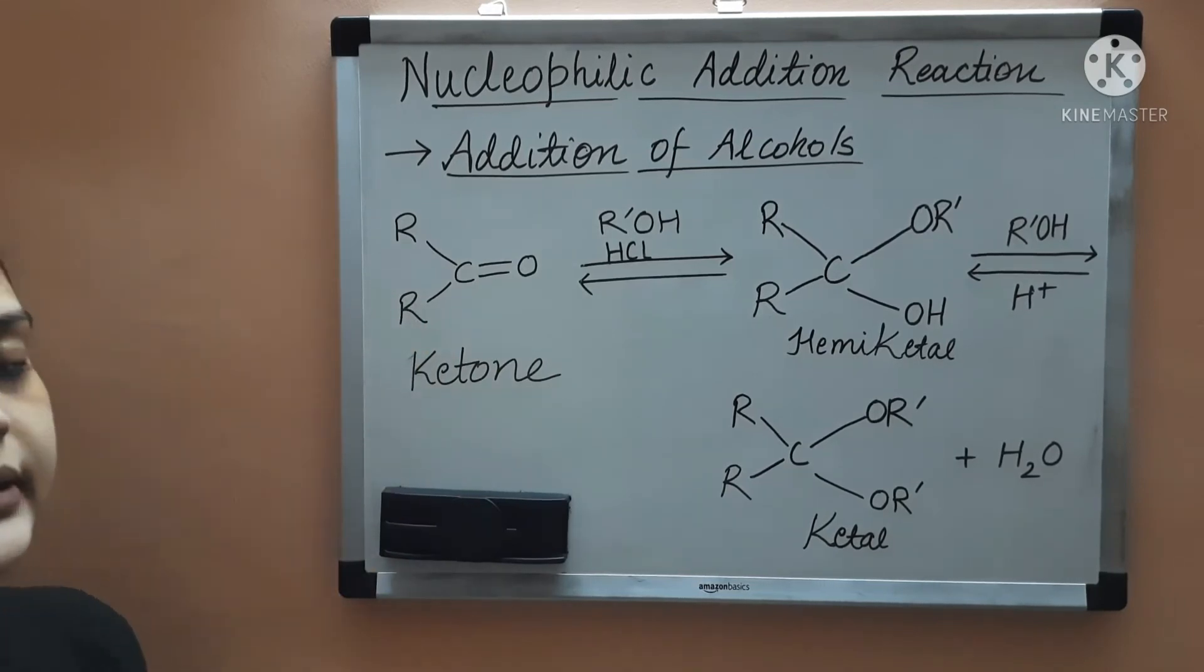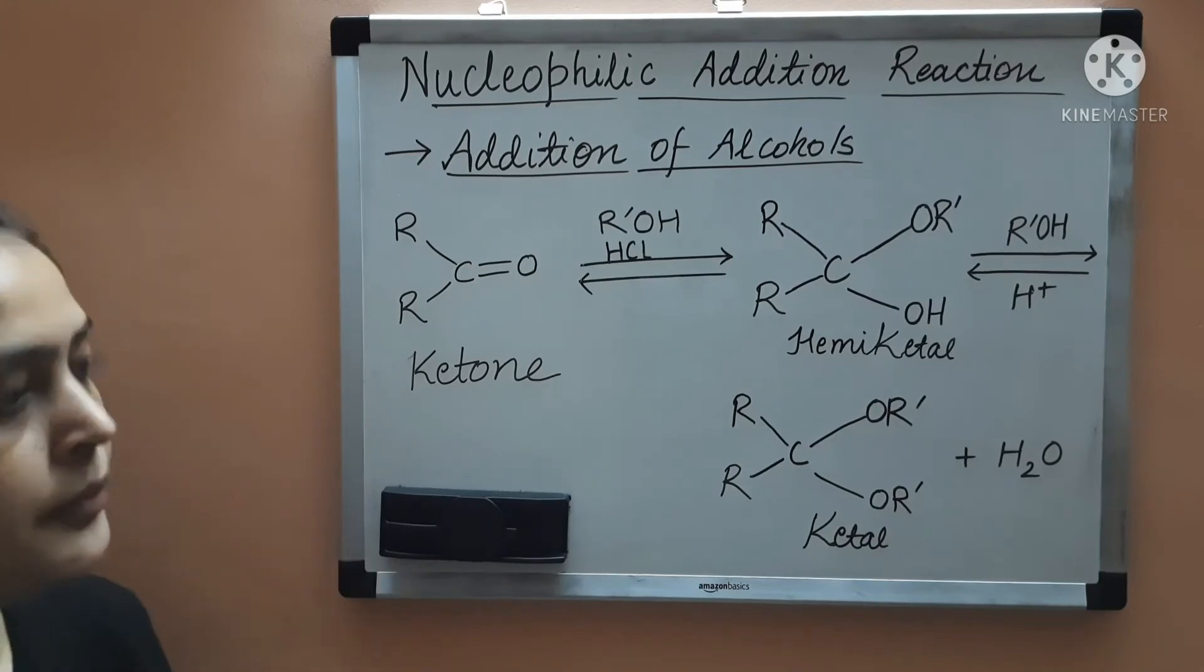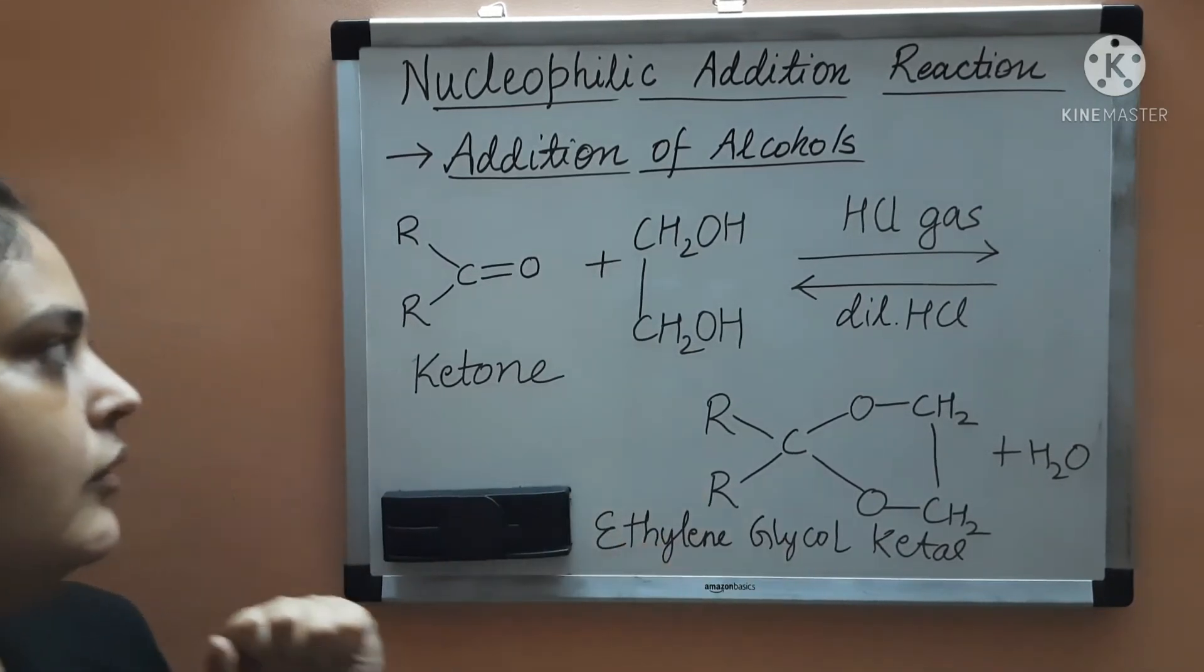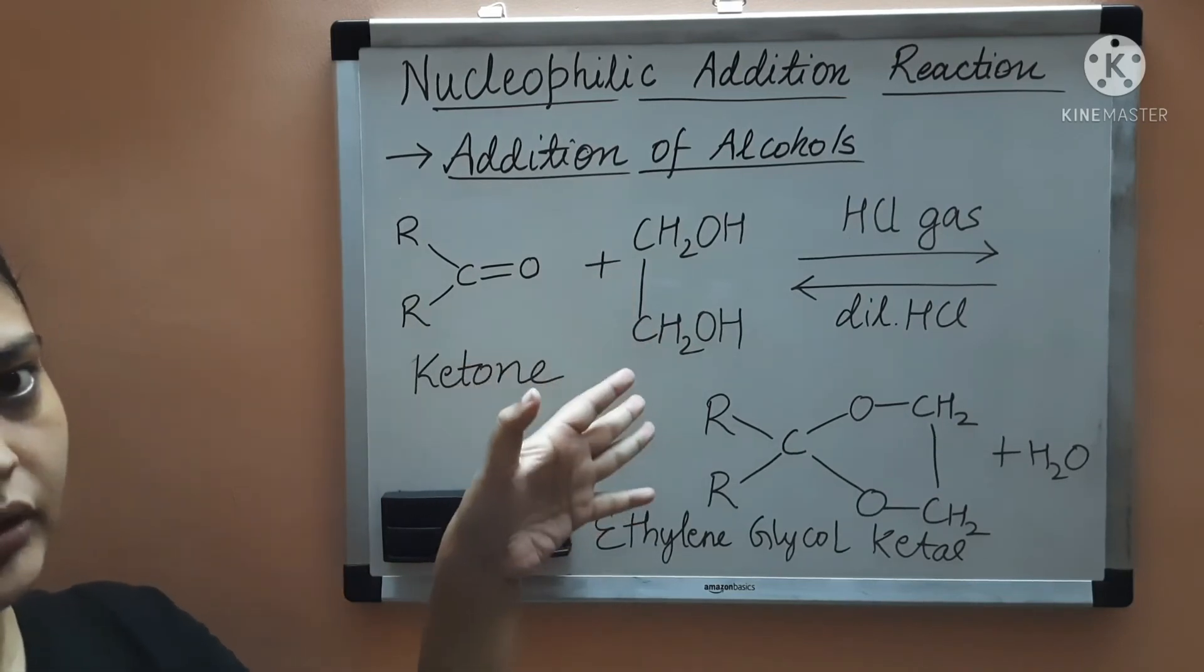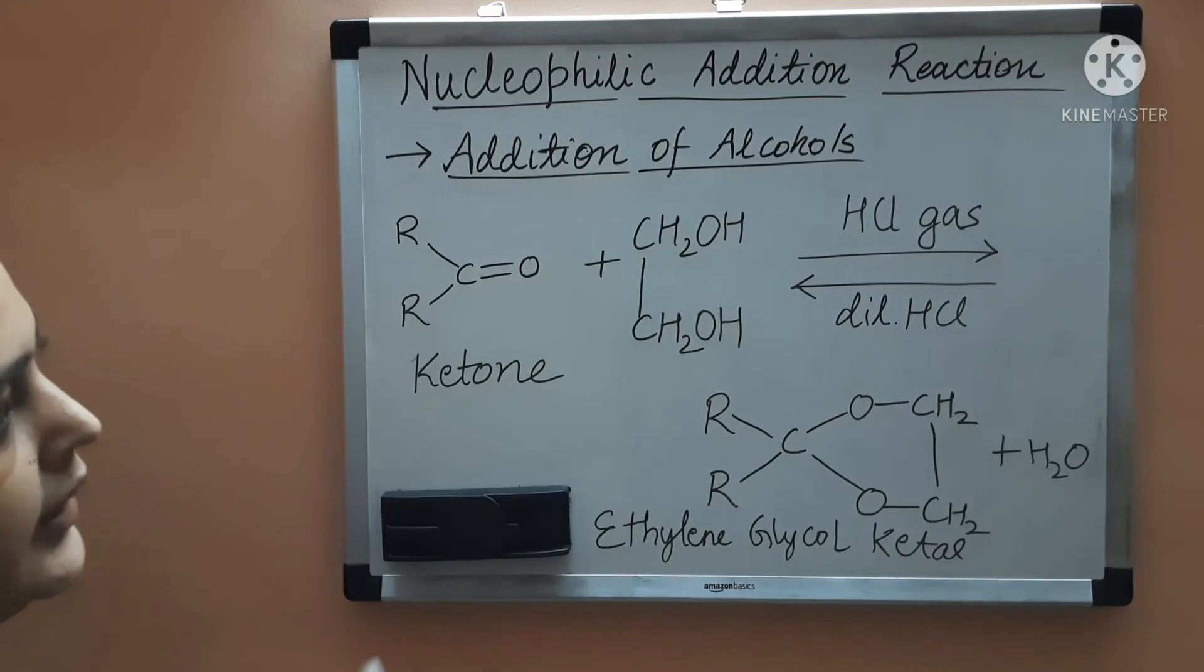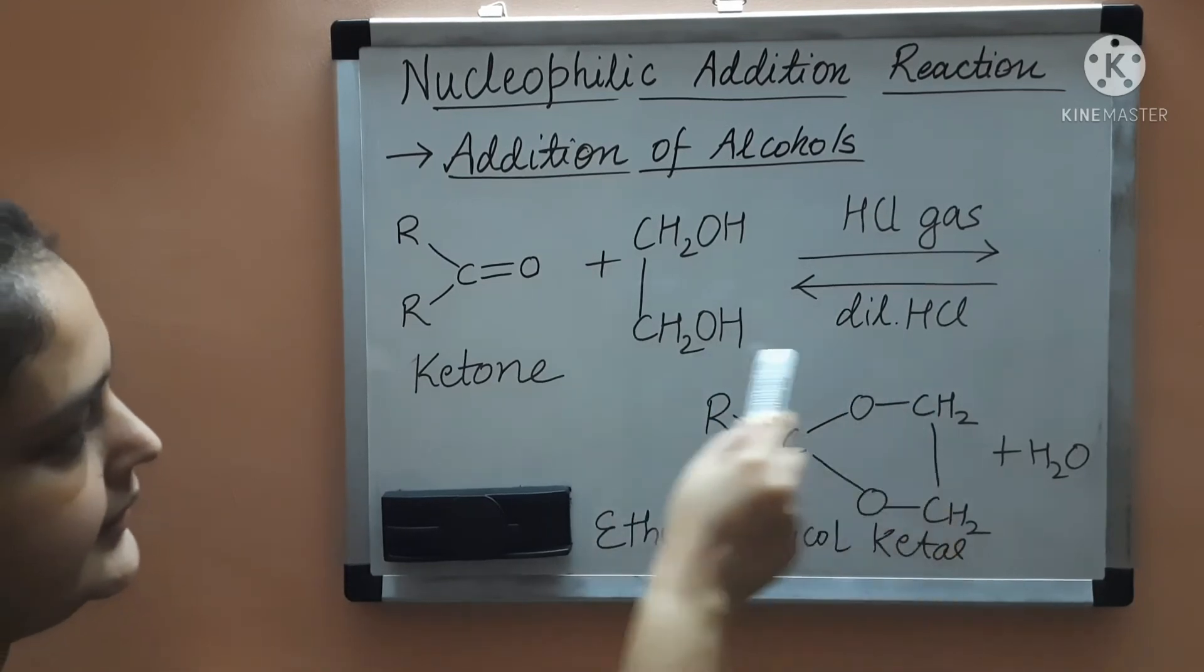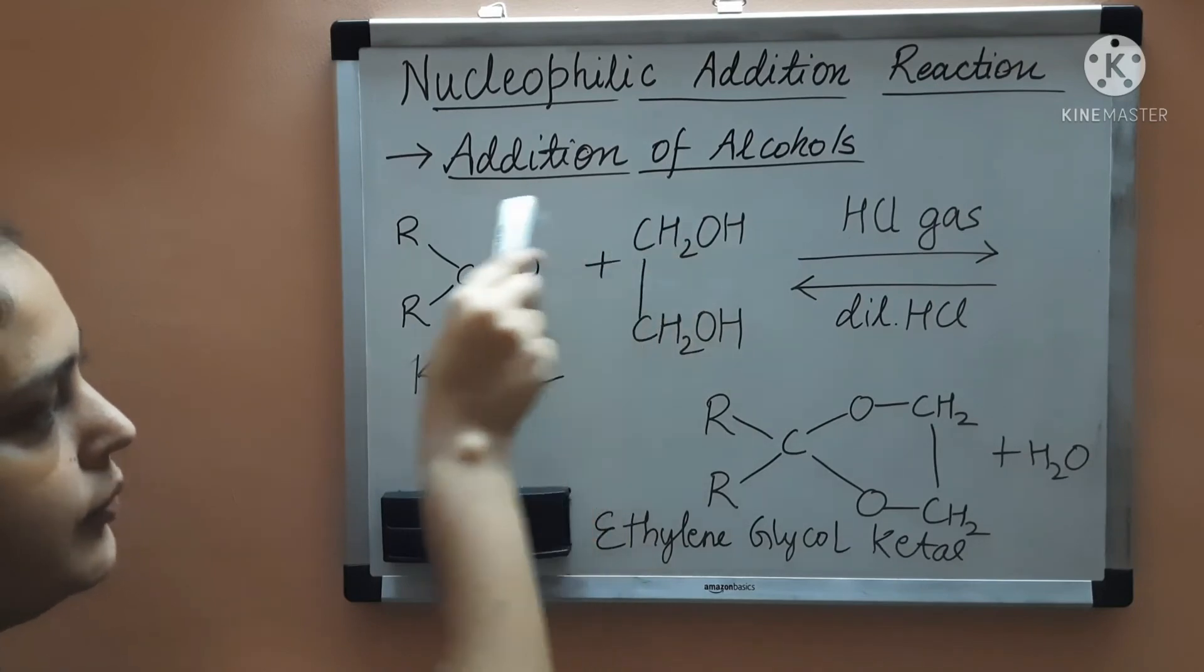You can get cyclic ketal also. Let me show you how. So to form the cyclic ketal we are going to add ethylene glycol to ketone and then also HCl gas to increase the electrophilicity of the carbon atom and we will get the cyclic ketal by removal of H2O from the product.